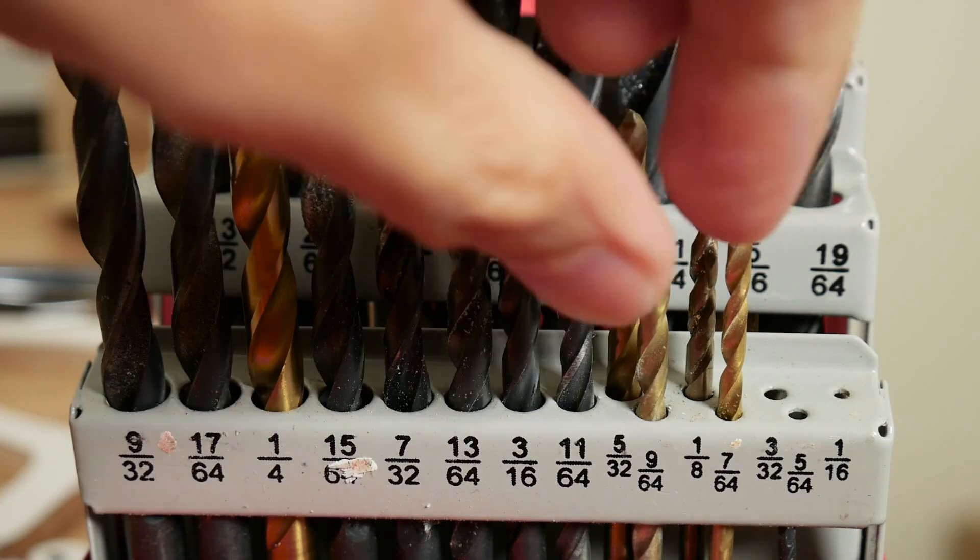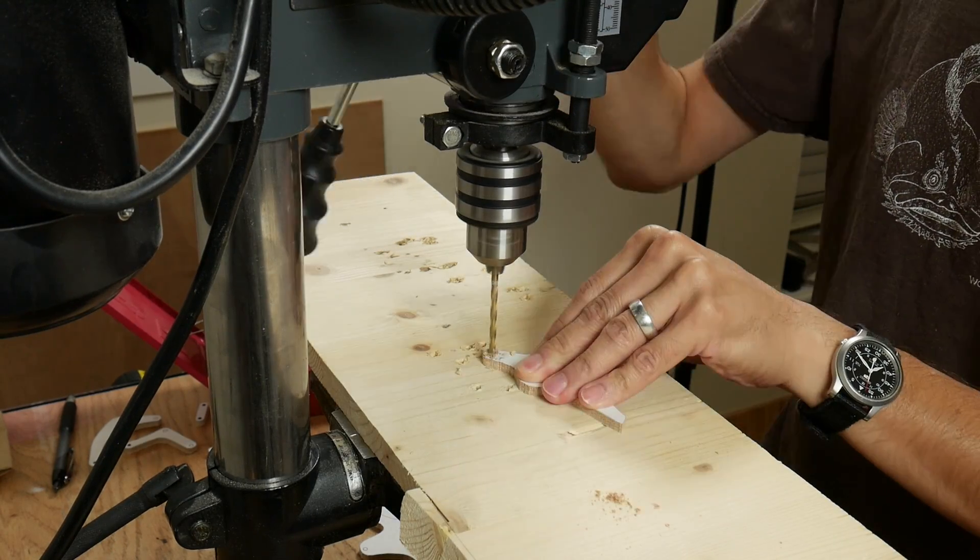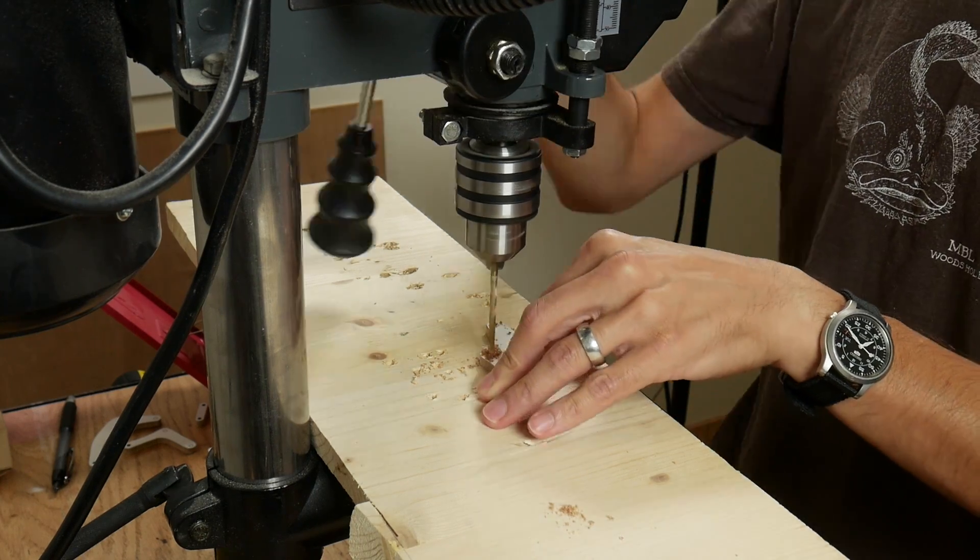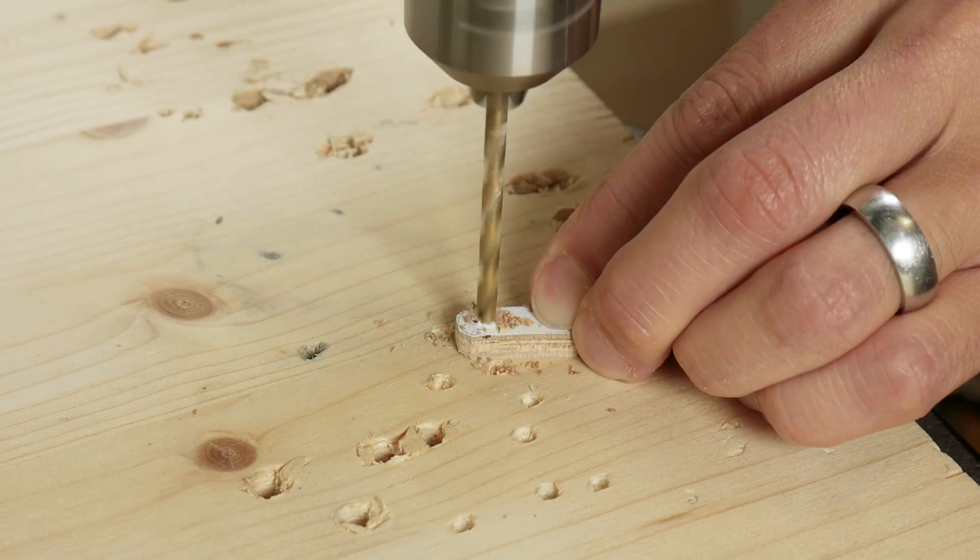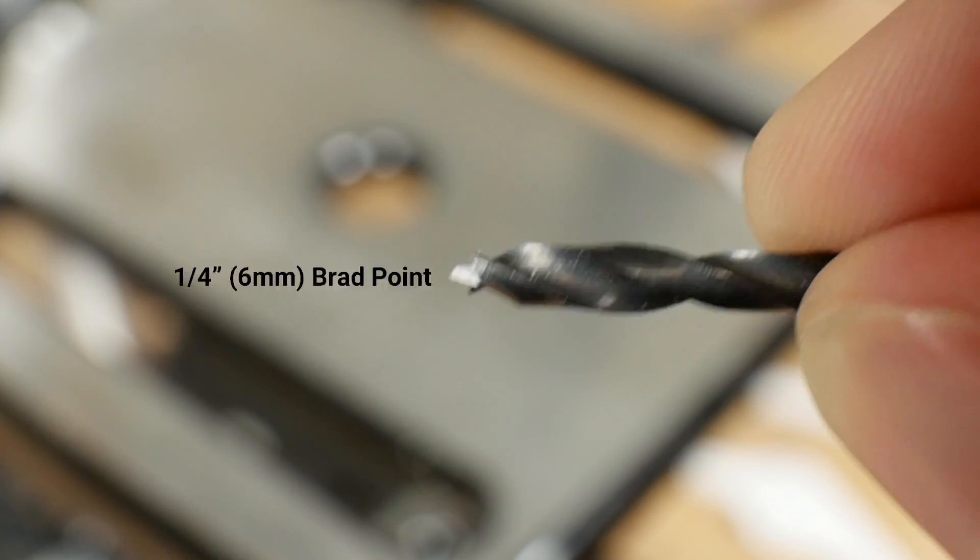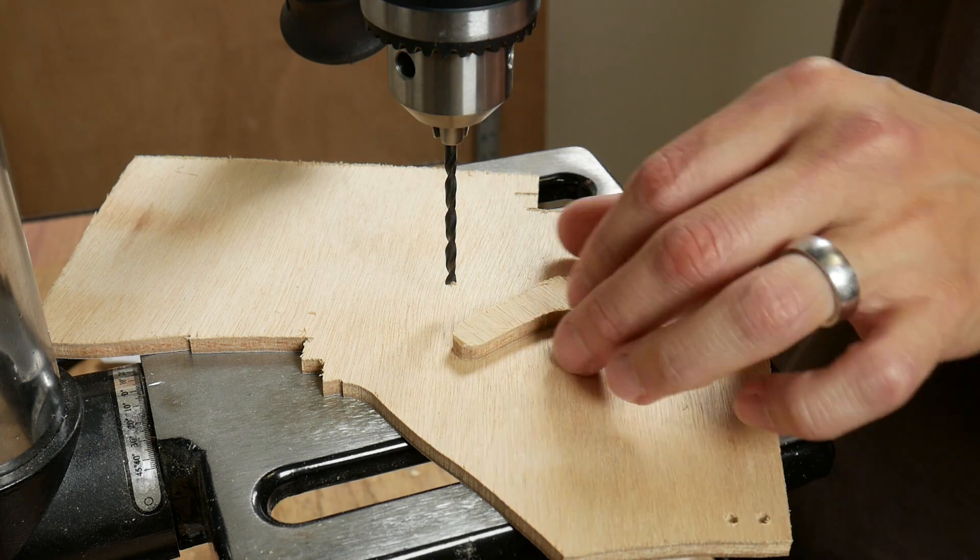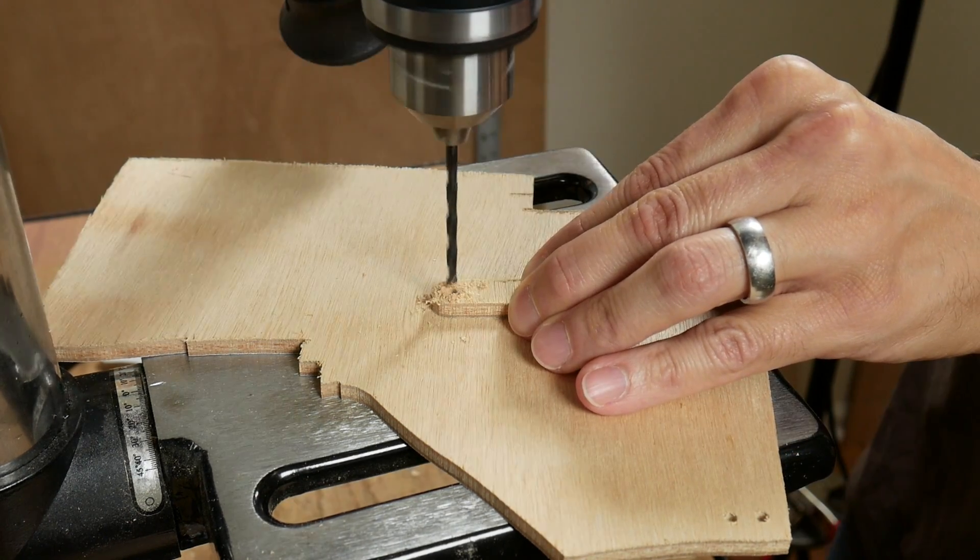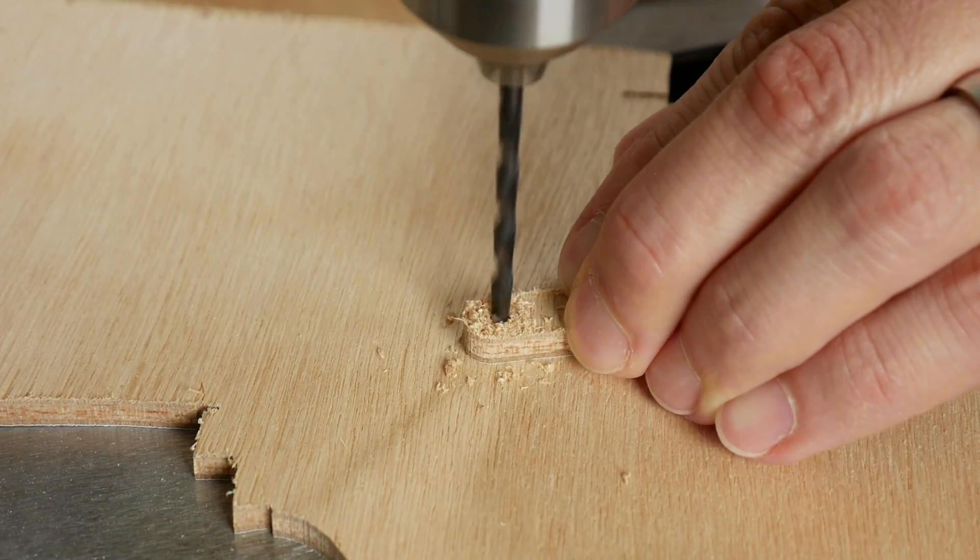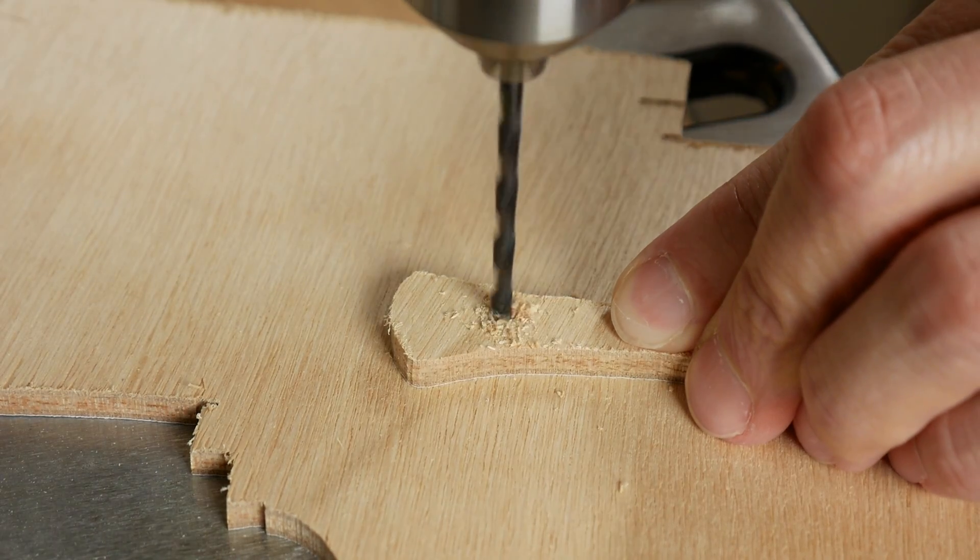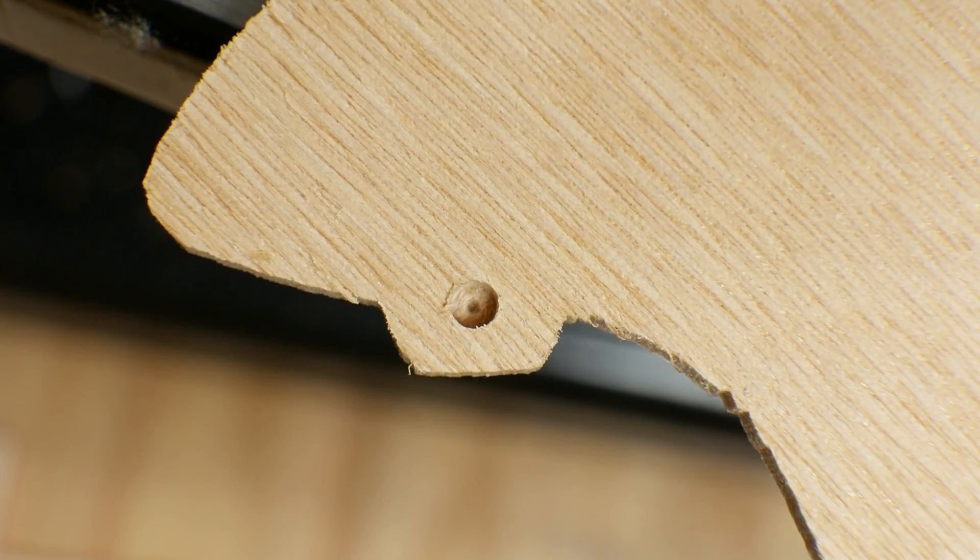I used a 9/64 inch drill bit to drill through holes at the filled circles on the template. I used a quarter inch brad point bit to drill holes partially through the open circles on the back side of the pieces. These holes don't go all the way through the wood and their bottoms are flat.